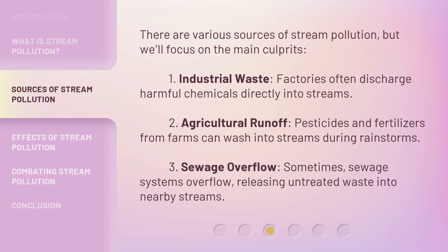Second, agricultural runoff: pesticides and fertilizers from farms can wash into streams during rainstorms. Third, sewage overflow: sometimes sewage systems overflow, releasing untreated waste into nearby streams.